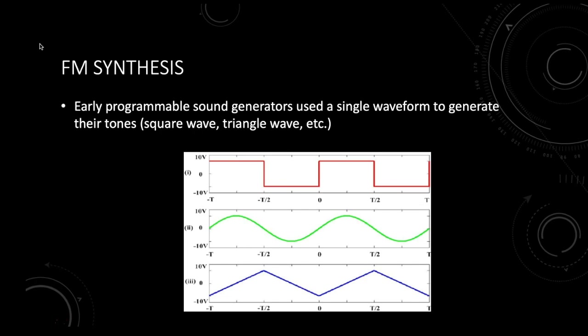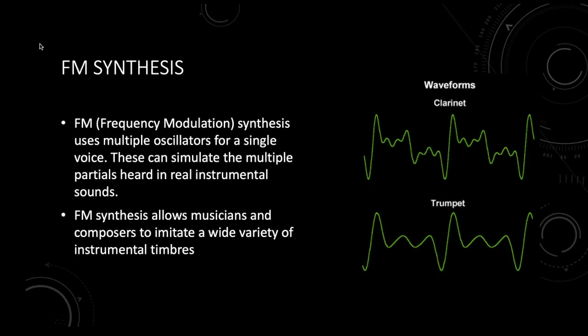A sine wave is pure. A square wave or triangle wave has different sorts of attack and decay. They don't really sound like real instruments. What FM synthesis does is allow you to generate multiple waveforms at once. An FM synthesis chip will use four to six different oscillators. An oscillator is what produces the sound in a synthesizer. FM synthesis uses a series of different waves at once, combined at different strengths at different partials.